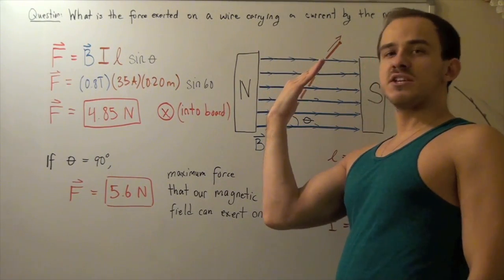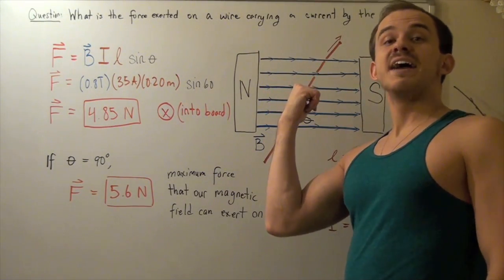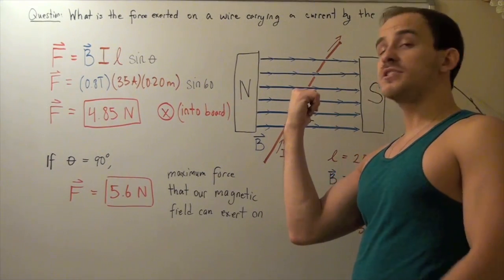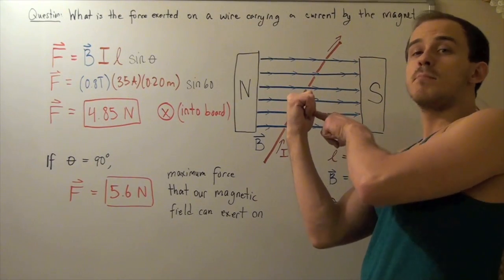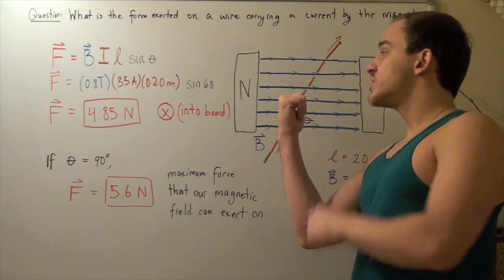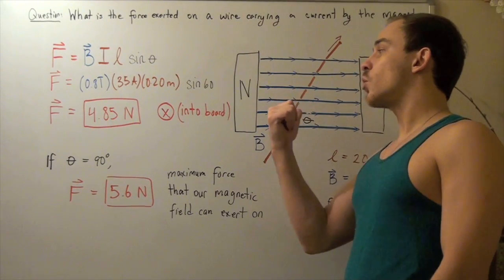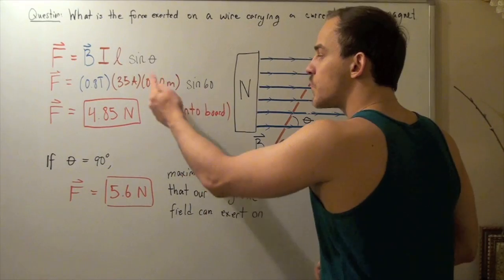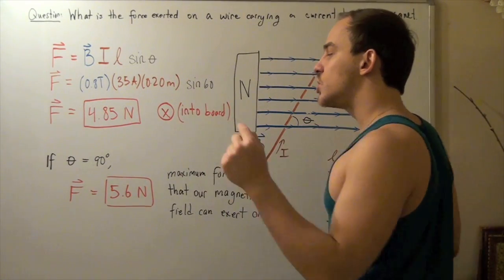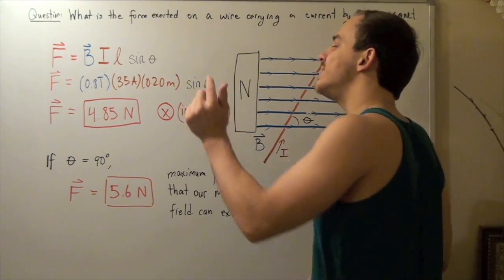So, our current is going this way, field is going this way, and that means our force must be pointing into our board, because our thumb points in the direction of our force. So, our force is into the board, or into the page, and that is represented by a circle with an X. So, this means going into the board, or into the page.